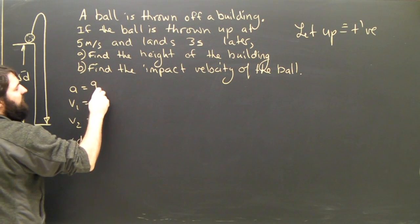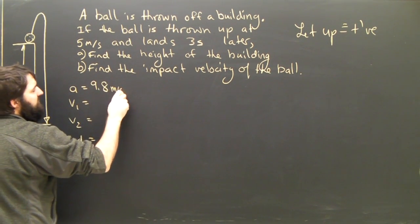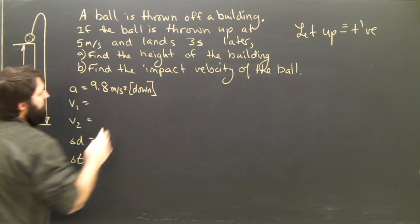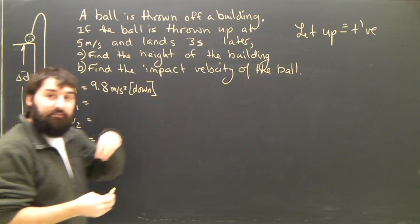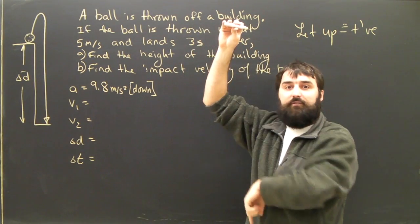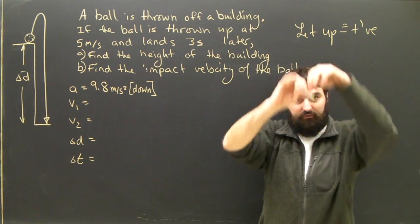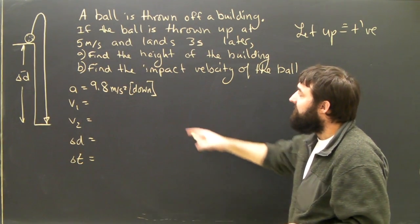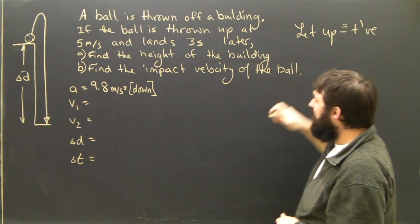What is the acceleration? Well, that is just 9.8 meters per second squared, and it is always down. As the ball goes up, gravity is down. When the ball is at the top, gravity is still down. As the ball falls, gravity is down, making it speed up. A is 9.8 meters per second squared down. And since I have said up will be positive,